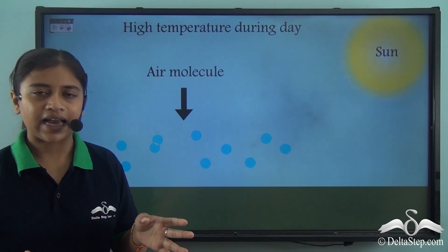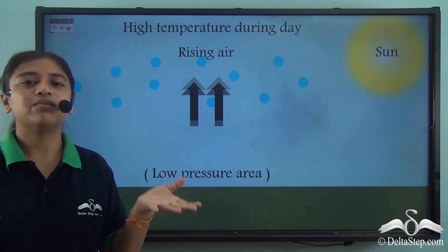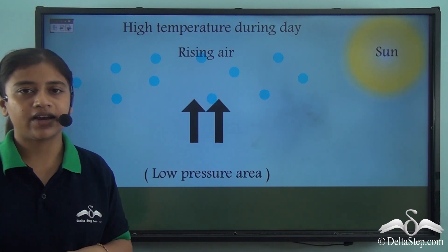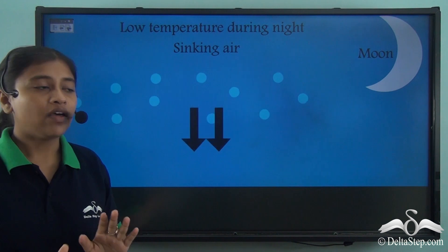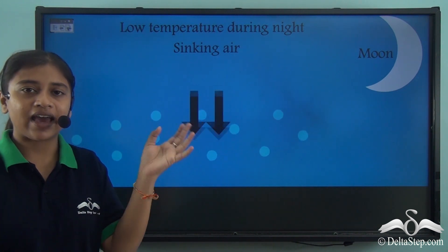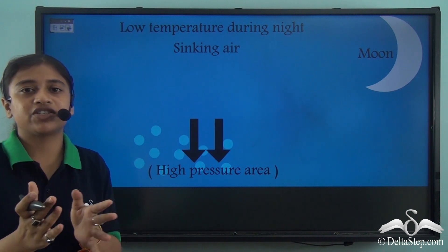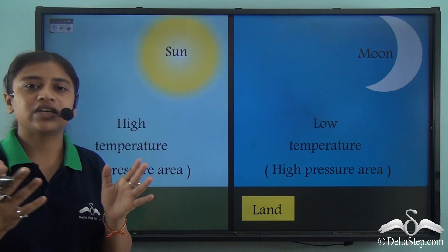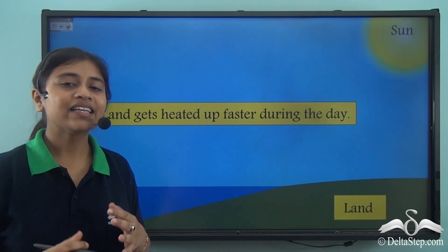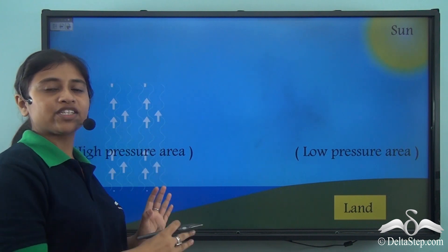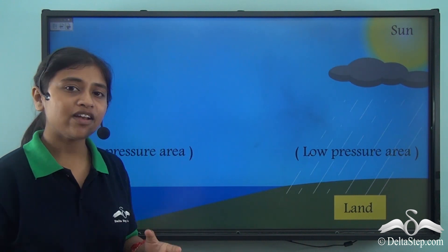During daytime, land gets heated up faster, causing high temperature. The air becomes light and rises, creating a low pressure area. During nighttime, the opposite happens — temperatures are low, so a high pressure area is created as the air becomes heavier and denser and sinks. The land gets heated faster during the day compared to the sea, so high pressure exists over the sea. When air moves from the high pressure area over the sea to the land, it carries moisture and brings rainfall on the land.